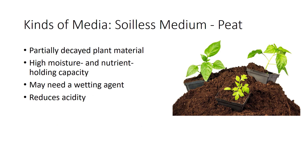Soilless medium contains no topsoil. Peat is a common source of organic matter found in soilless media. It is partially decayed plant material composed mainly of organic matter, helping it hold nutrients. The most common type used is peat moss, obtained from moss plants growing in bogs — specifically sphagnum and polytrichum species, with sphagnum being the most common. Peat is used for its moisture and nutrient-holding capacity, though it may initially need a wetting agent and can reduce the acidity of the media.